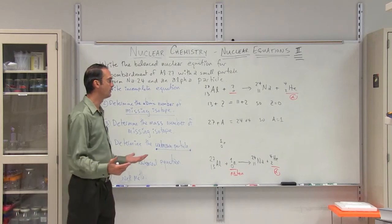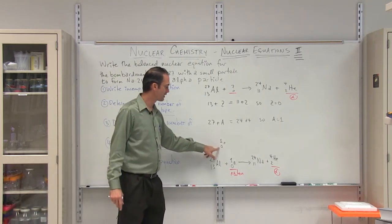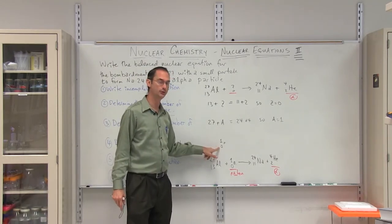So, determine the unknown particle. Well, what do we know that has a mass but no charge? That would make it a neutron.